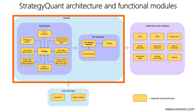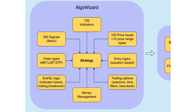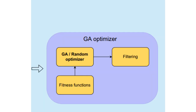The Builder module includes two sub-modules: the Algo Wizard module and the Genetic Algorithm module. The Algo Wizard module comprises various functional blocks, such as signals and indicators, that enable the assembly of multiple strategies using different logic. The Genetic Algorithm module automatically generates various strategies based on the selected Algo Wizard blocks, which can be further validated using the Retester module.